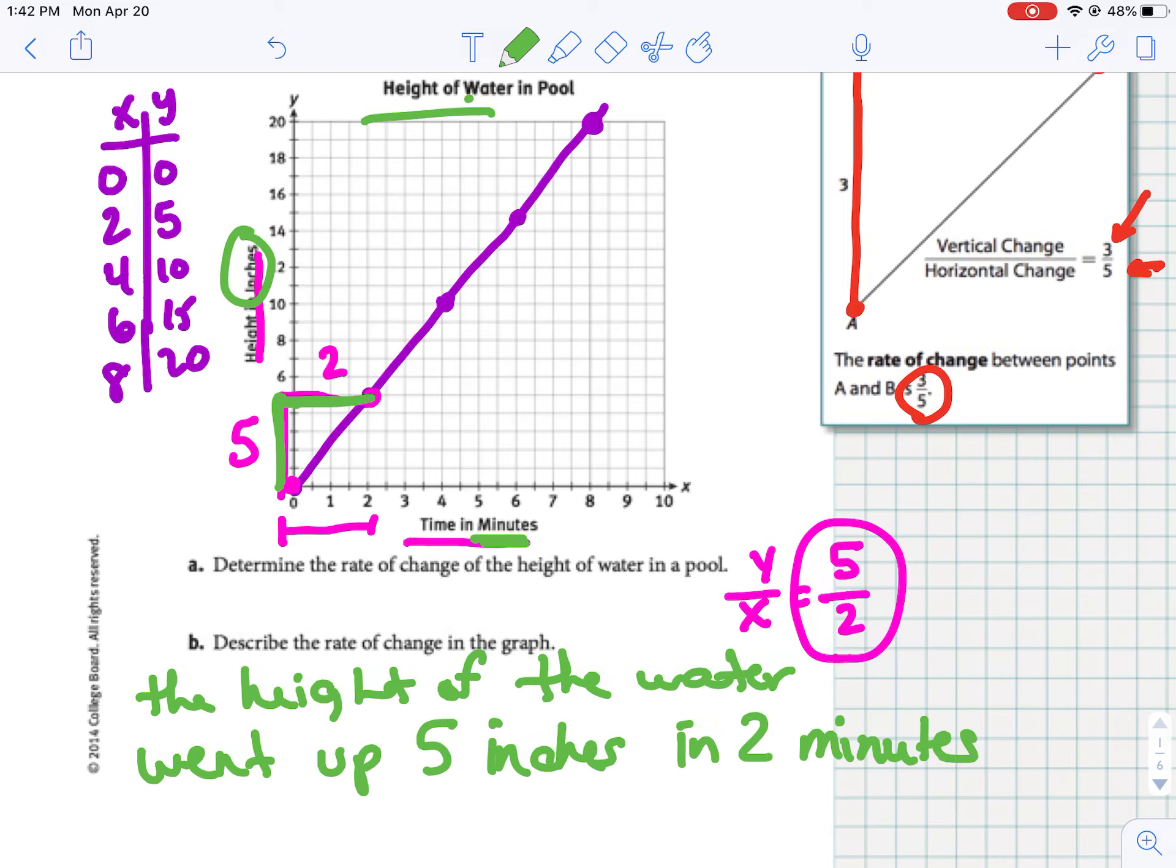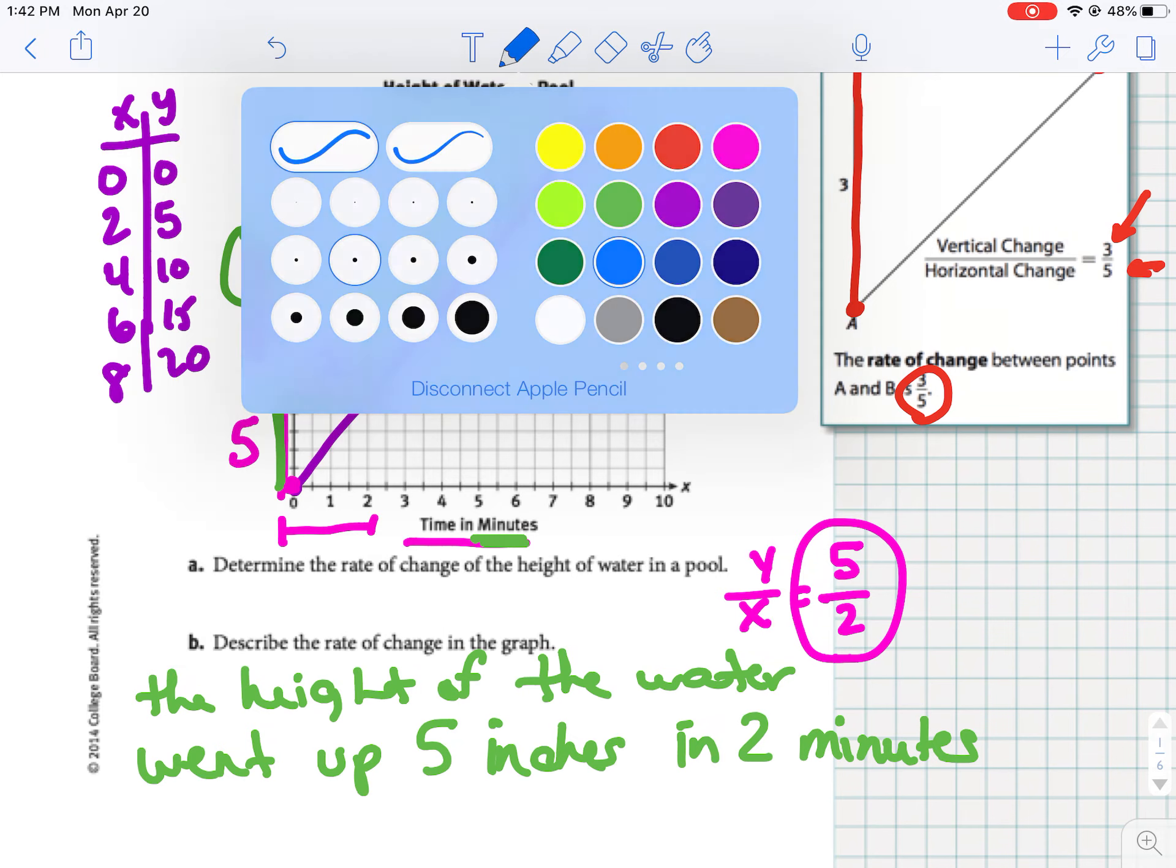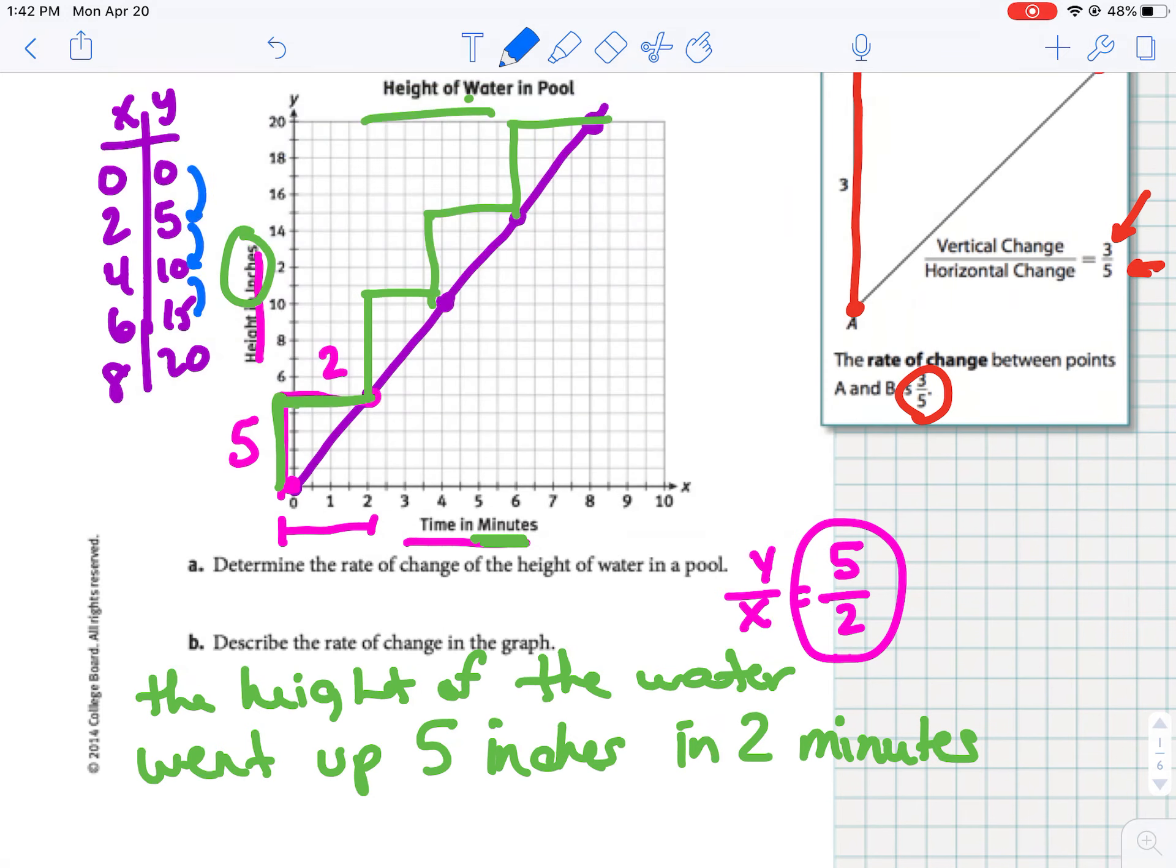Okay, so every 2 minutes, that water is going to go up 5. So it doesn't matter what points we would have used. It goes up 5 over 2, up 5 over 2, up 5 over 2. We could also see that if we did have a table, our Y values are going up 5, which we've done before, and our X values are going up 2. So we could get the 5 over 2 that way as well.